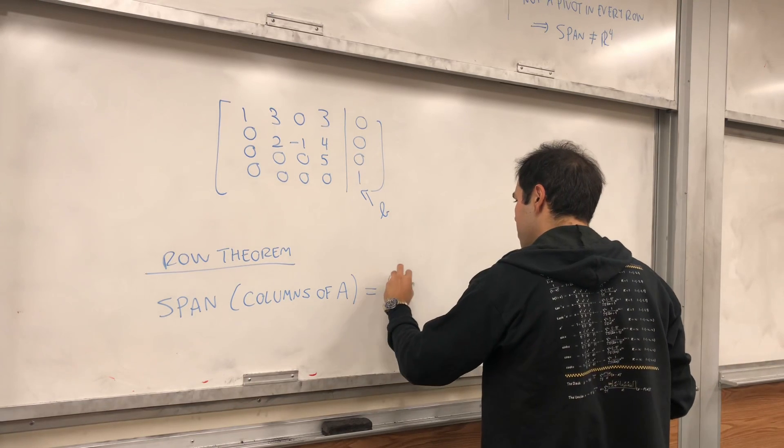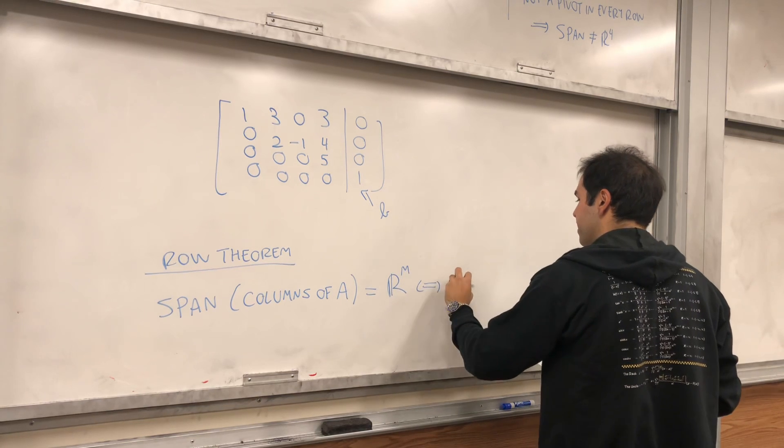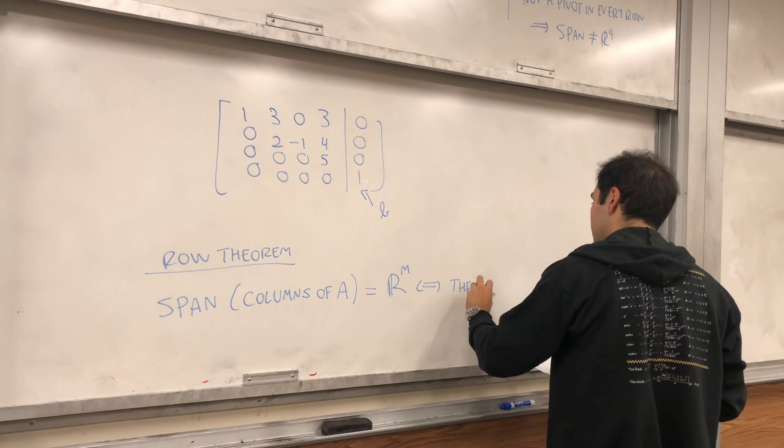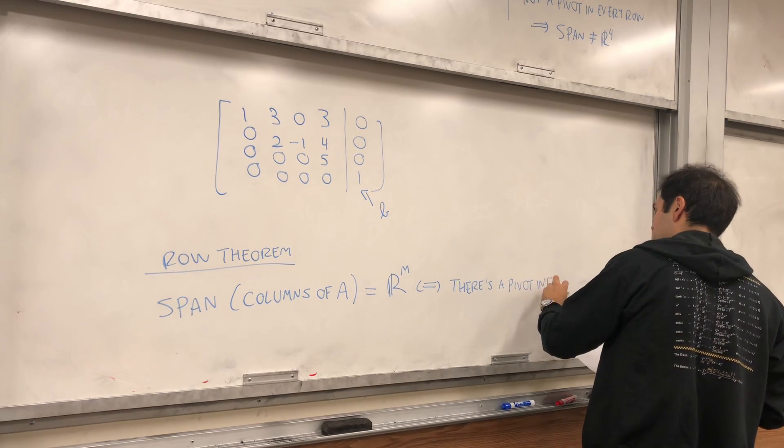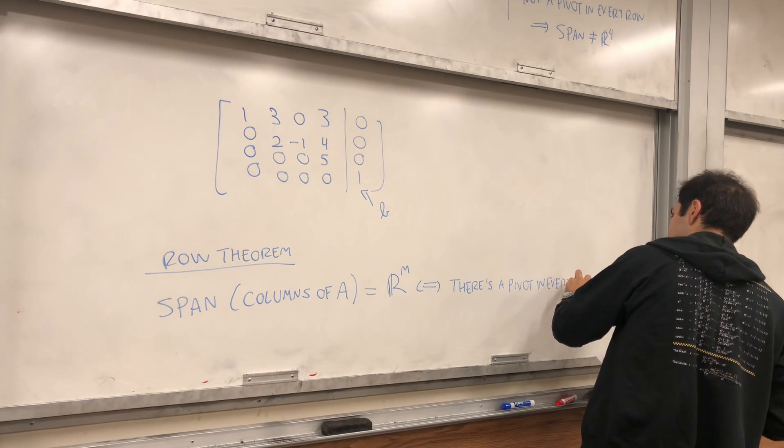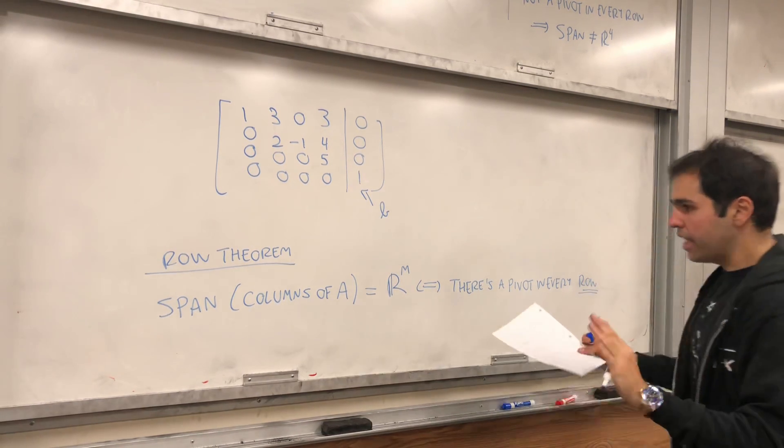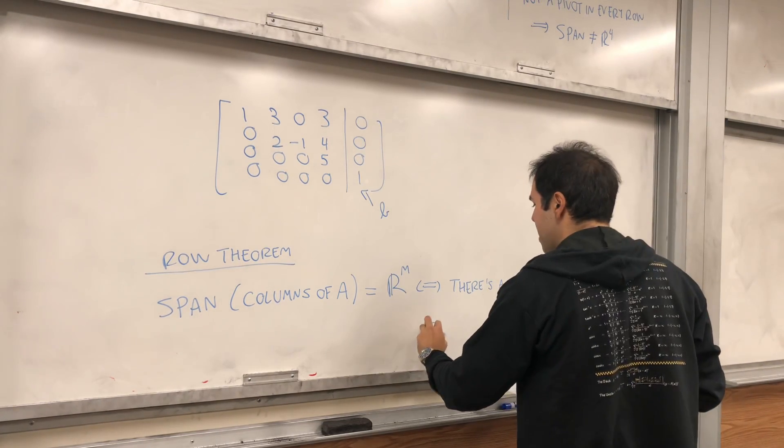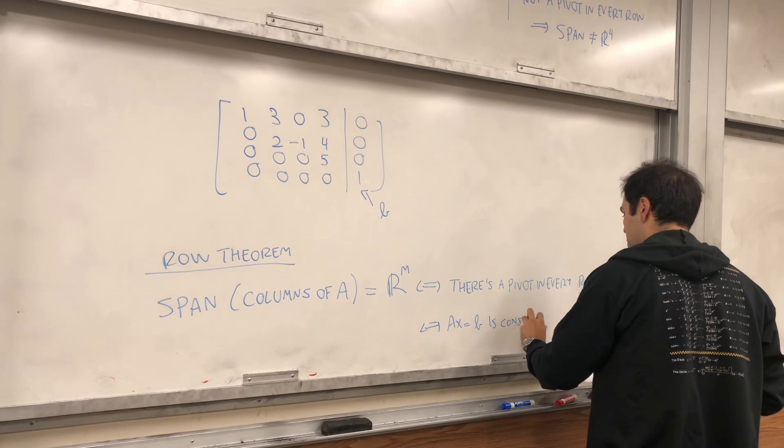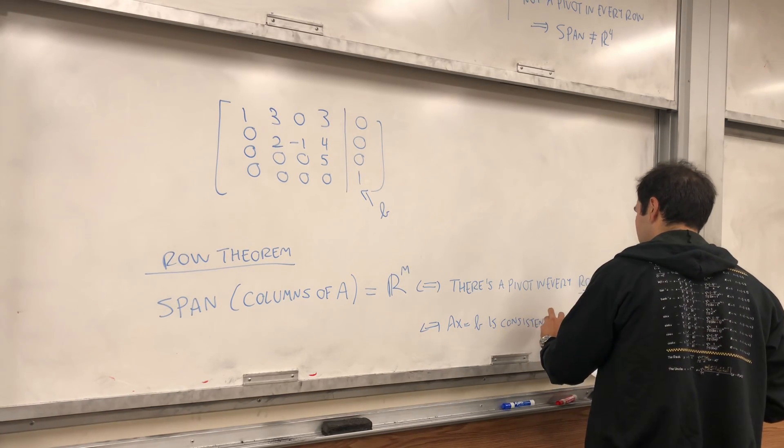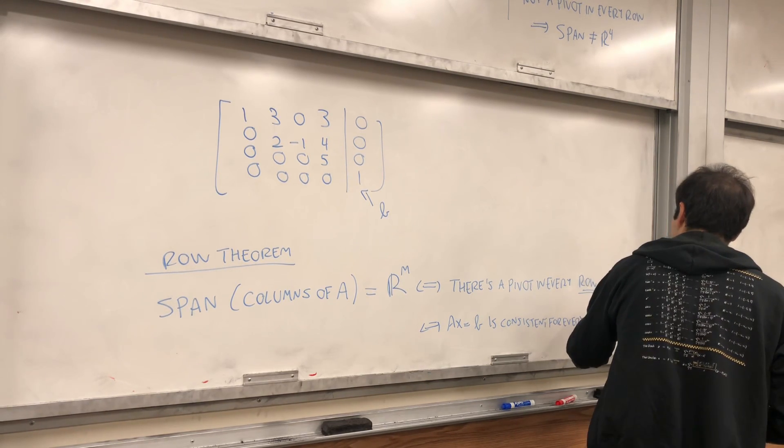The span of the columns of A, that's what's called the column space, equals to, so, in this case, I think, RM, if and only if there are pivot, there's a pivot in every row. And that's the same thing, also, as saying, A, X equals to b is consistent for every b.